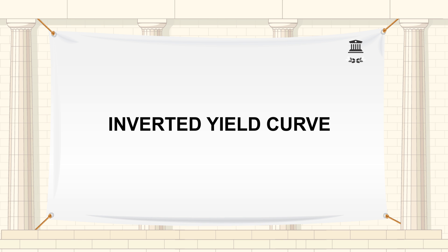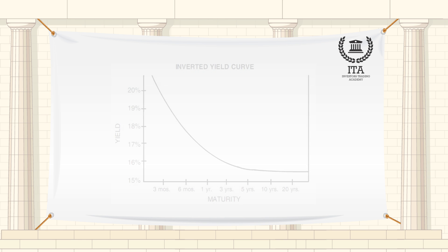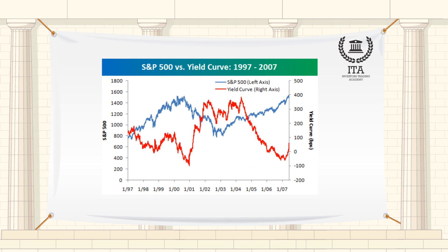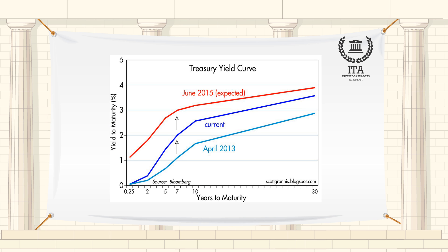Also referred to as negative yield curve, it is a rare scenario in which short-term interest rates produce higher yields than long-term interest rates. When this happens, it is usually an indication that an expected decline in interest rates are to occur. An inverted yield curve is when the yields on bonds with a shorter duration are higher than the yields on bonds that have a longer duration.